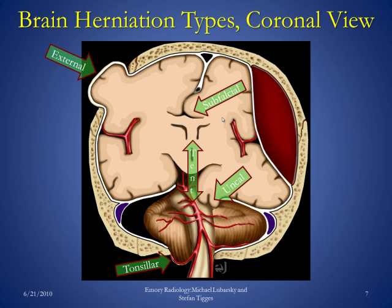Another type of herniation is tentorial herniation. The tentorium is a reflection of the dura mater that is inferior to the brain and separates the cerebellum from the brain. Whenever we have tentorial herniation, either the brain herniates inferiorly or the cerebellum herniates superiorly, compressing the brain or the cerebellum.